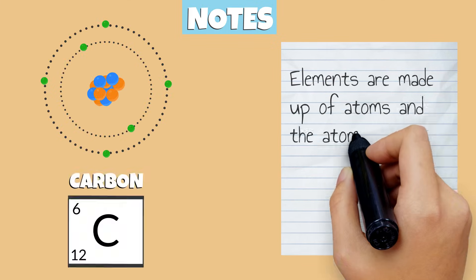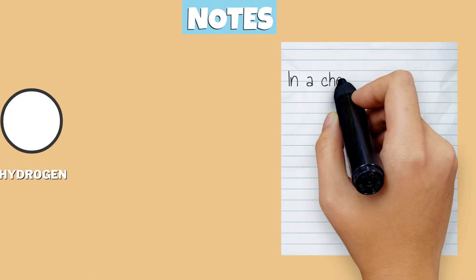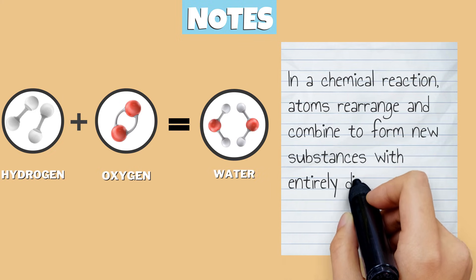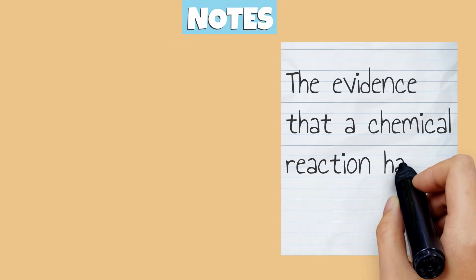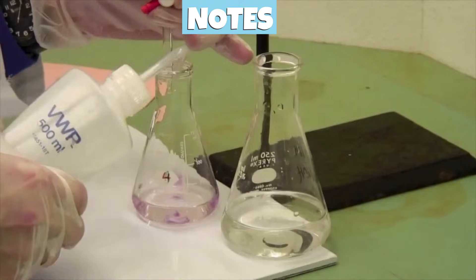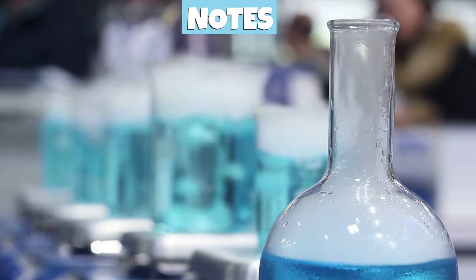Let's review what we just learned. Elements are made up of atoms and the atoms determine the chemical and physical properties of the element. In a chemical reaction, atoms rearrange and combine to form new substances with entirely different properties. The evidence that a chemical reaction has occurred is when light is produced, heat is emitted or absorbed, the color of the reactant changes, and there is a formation of gas or a precipitate.